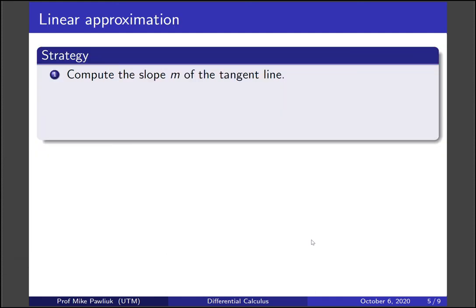So formally this is called linear approximation. We're approximating something by a line and formally this is in section 3.10 of the textbook but we're introducing it now because we want you to have an idea of one thing that you can use tangent lines for.